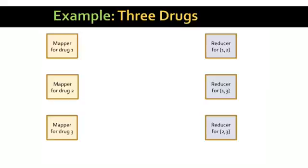In the real problem, there were 3,000 mappers and 4.5 million reducers. And for any number of drugs greater than three, there will be more reducers than mappers.